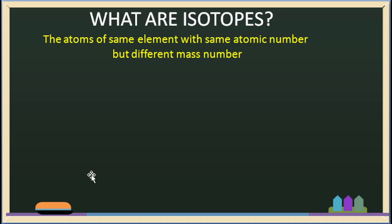What are isotopes? Isotopes are atoms of the same element — the same element with the same atomic number, of course.